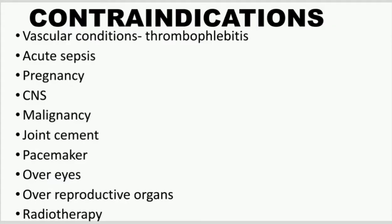Contraindications of ultrasound include: vascular conditions like thrombophlebitis, as it can dislodge emboli to different places; areas of acute sepsis, due to danger of spreading infection; the lower back or pelvis of pregnant patients, as maternal hypothermia has been associated with fetal abnormalities; patients who have undergone laminectomy or have spina bifida where the spinal cord is exposed, as ultrasound can damage CNS tissues; tumors, due to the fear of metastasis; and areas of joint replacement, as heat can lead to loosening of the prosthesis.